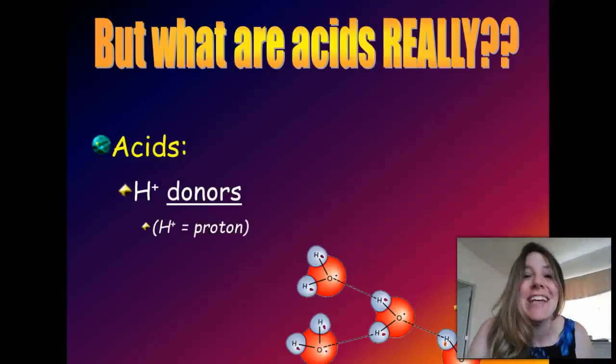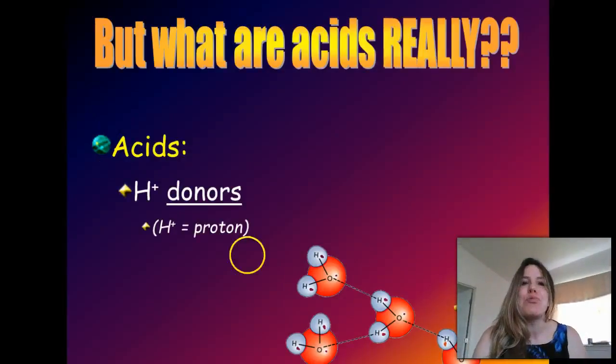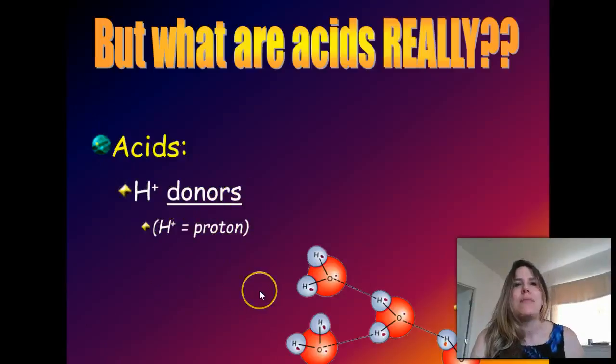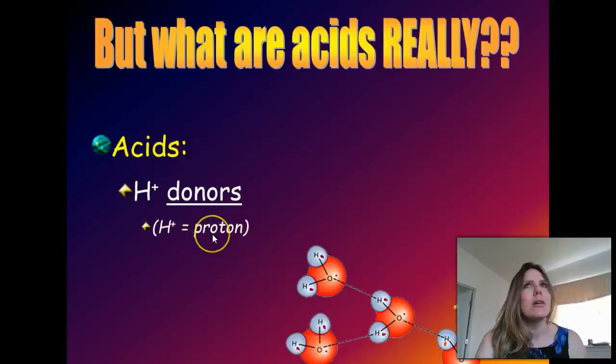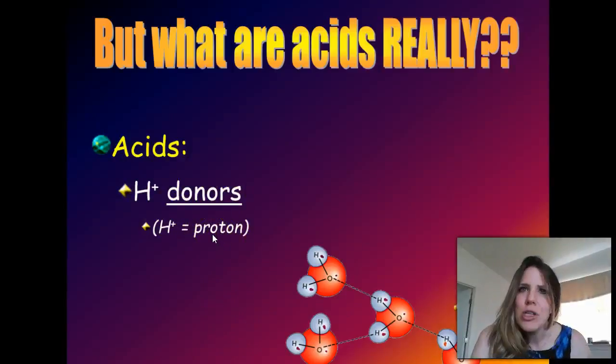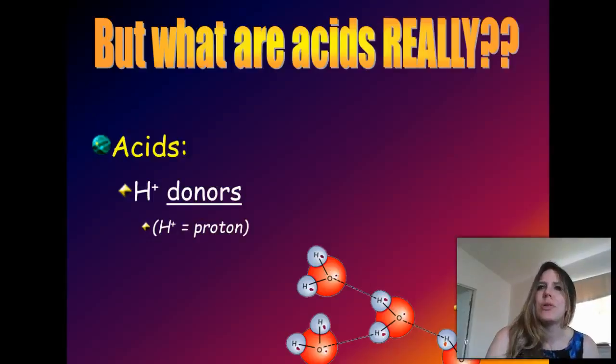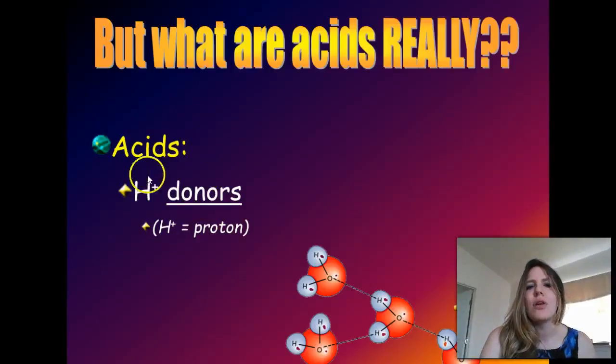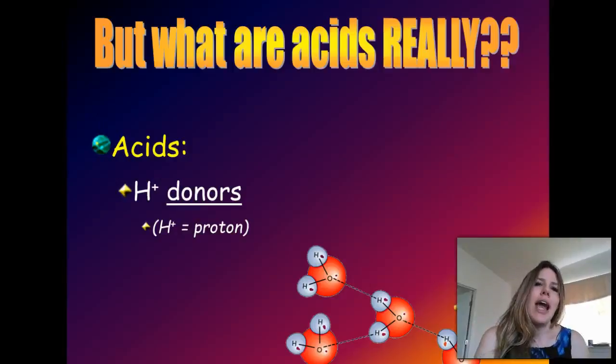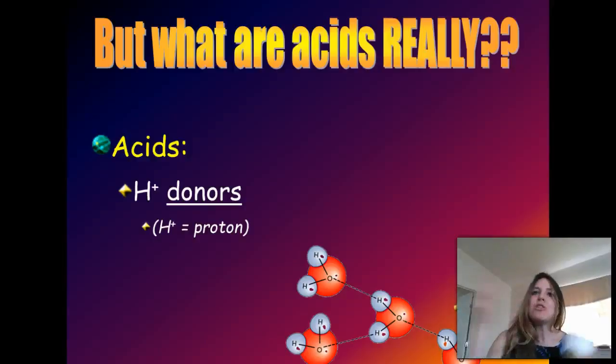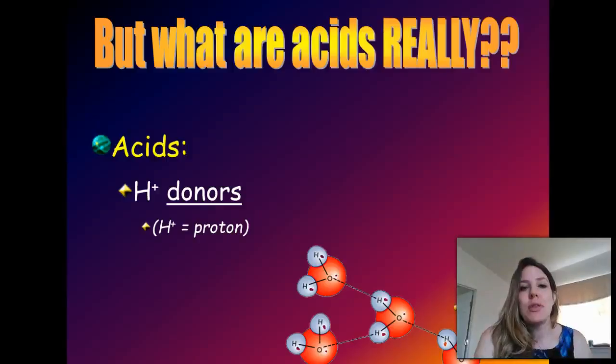But what exactly is an acid? An acid is a proton donor. When I say proton here, it's kind of different from what we were talking about when we said protons as subatomic particles in the nucleus of the atom. A proton here is just referring to a hydrogen ion. So, a hydrogen that has lost one of its electric charges makes it more positive. An acid donates these hydrogen ions, donates these protons to another solution, and that makes it an acid because it's lost some of those hydrogen ions.